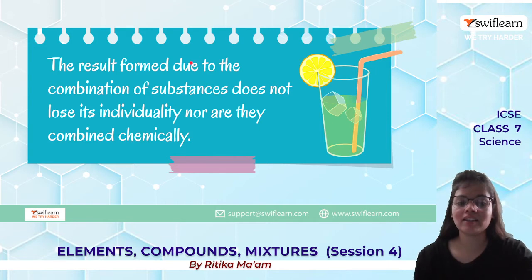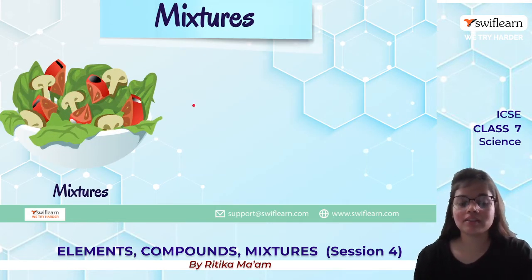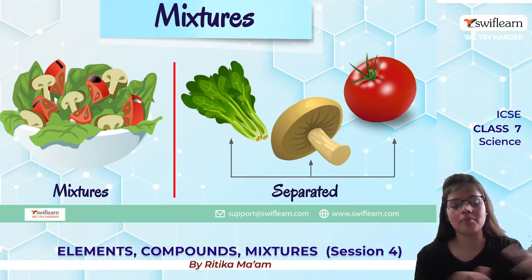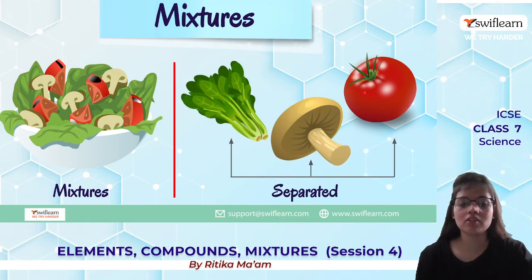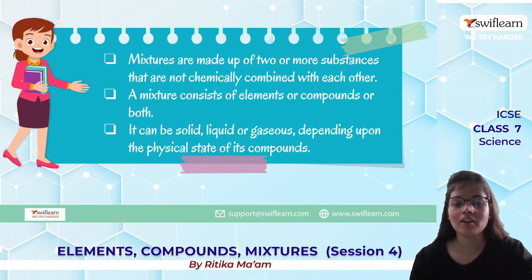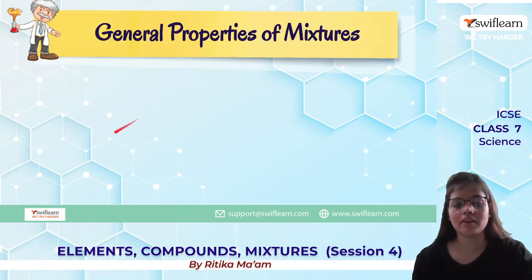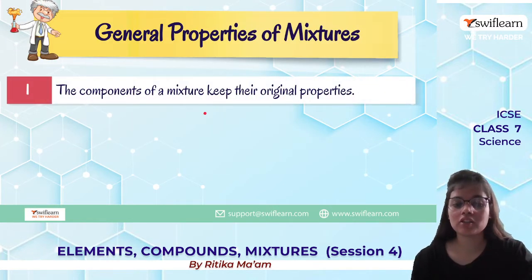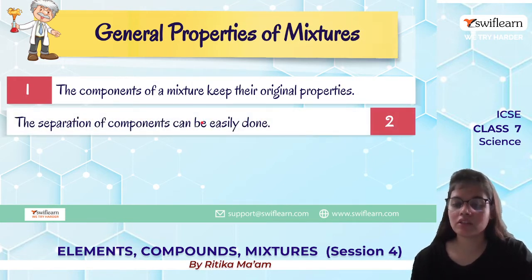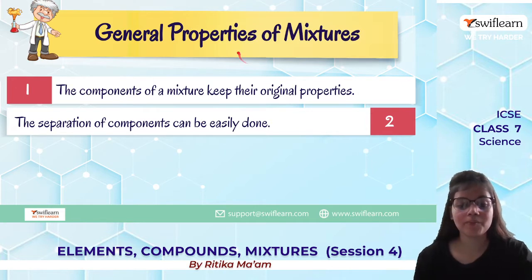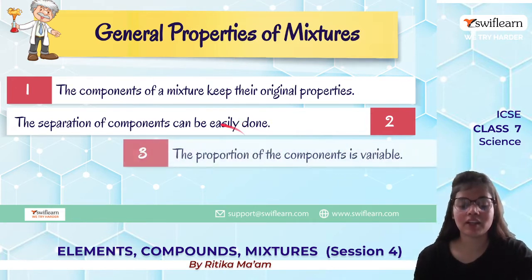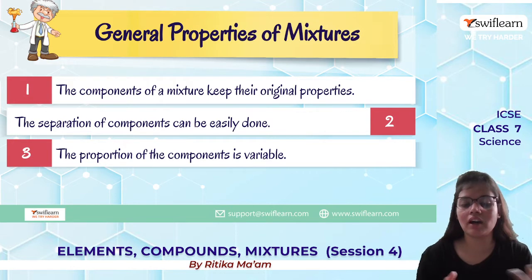For example, a salad is a mixture — if we separate the constituents, we have spinach, mushroom, tomato. Mixtures are made up of two or more substances which are not chemically combined with each other. They may consist of elements, compounds, or both, and can be solid, liquid, or gaseous depending on their physical state. Properties of mixtures: the components keep their original properties and do not lose them, separation is easy, and the proportion of components is variable — unlike compounds, mixtures do not have a fixed ratio.